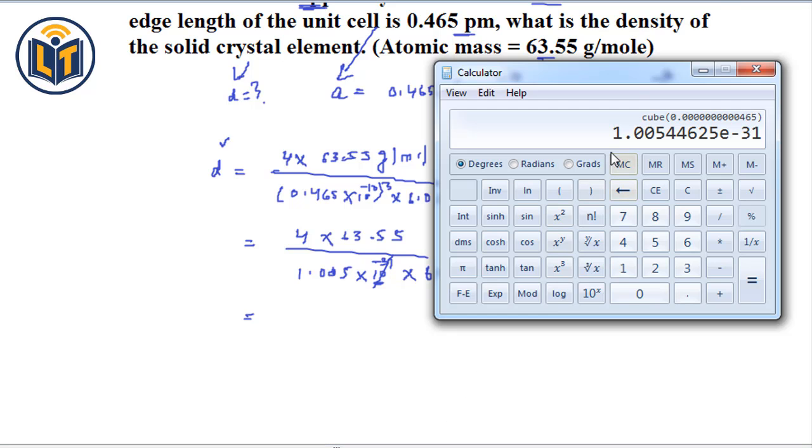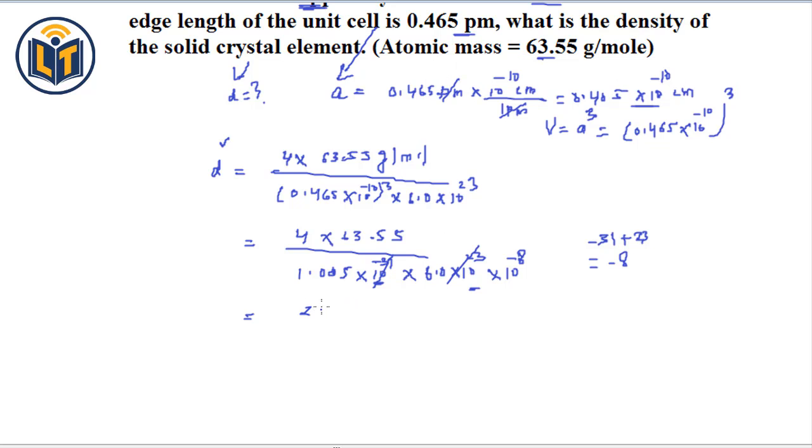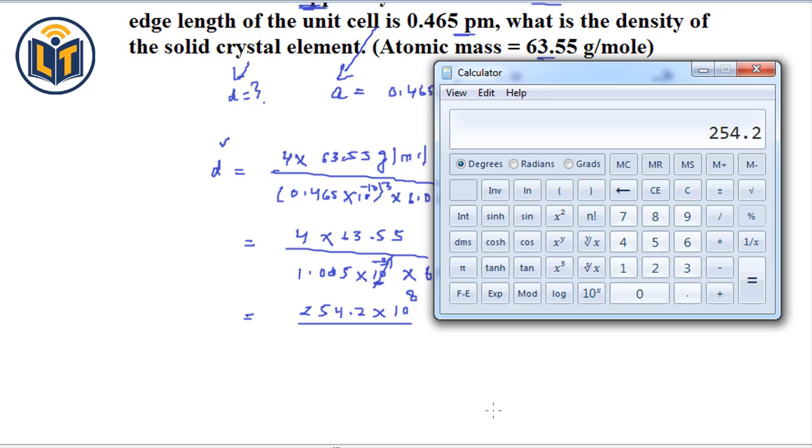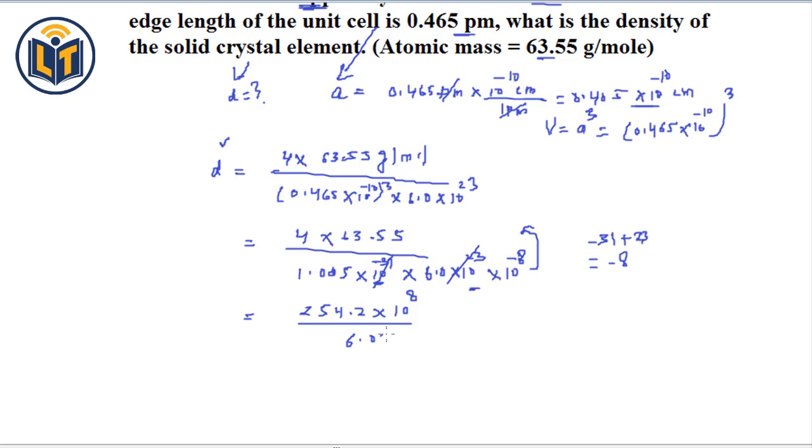We can multiply the top numbers and bottom numbers and we can divide them. At the top, we have the value that is 4 multiplied by 63.55. The value which we get 254.2, multiplied by, we can take it up. This is negative exponent. It becomes positive when it goes up. And so, at the bottom, we have 1.005 and multiplied by 6.0. Here, we have 6.0. The value which we get that is 6.03.